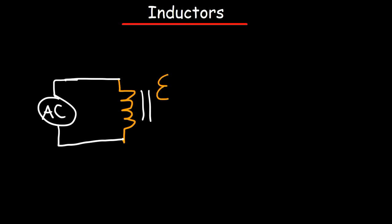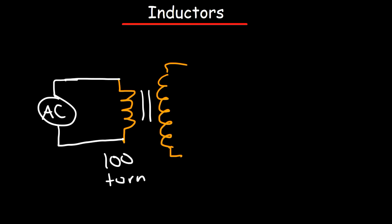Now the number of turns in these two coils differ. Let's say the first coil, the primary coil, has 100 turns. And the second one, the secondary coil, has 1,000 turns.